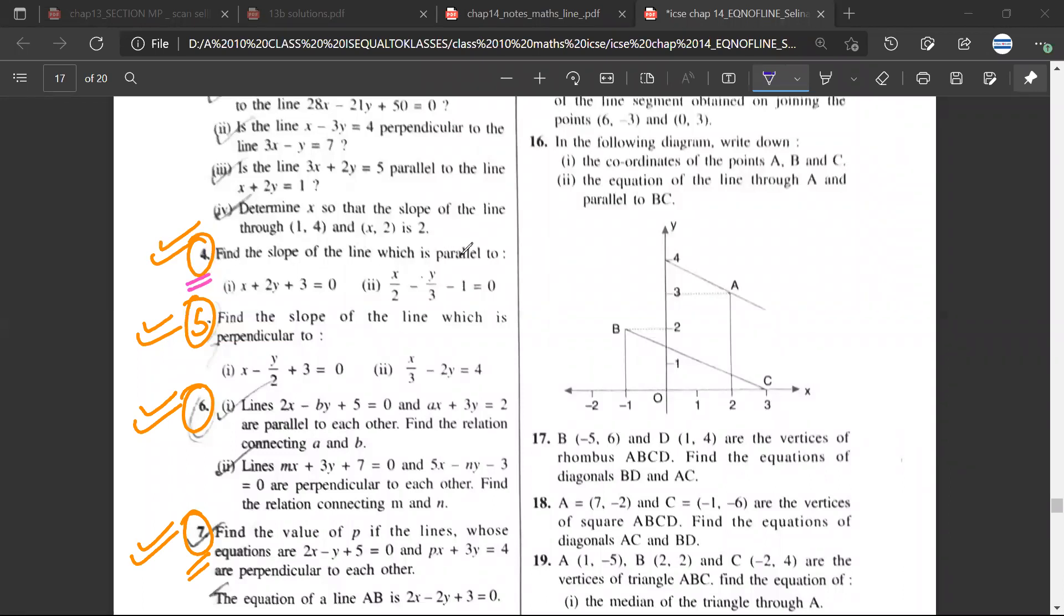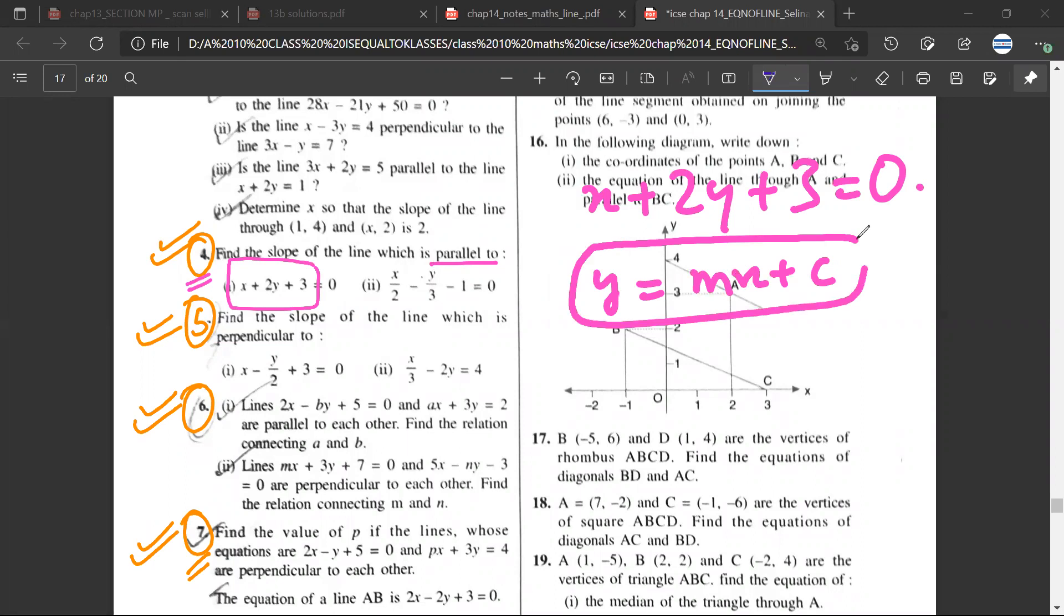Okay, question 4: find the slope of the line which is parallel to this. The equation in the simplest and most popular form you will use is y equals mx plus c.